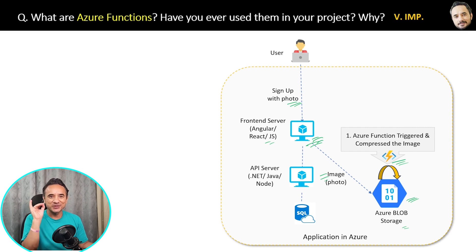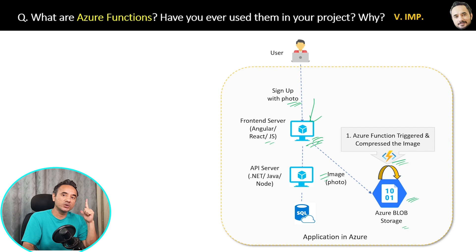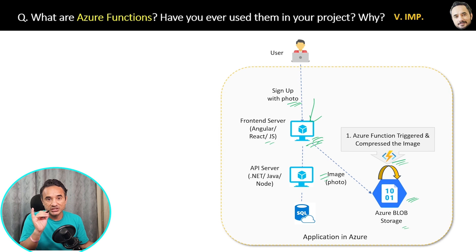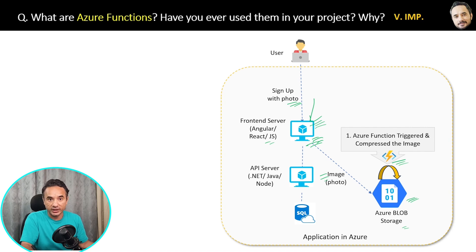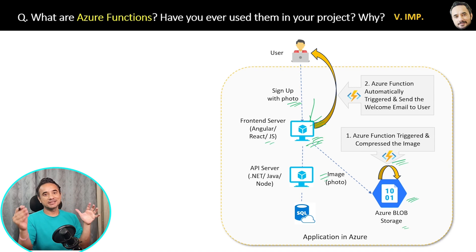So here is one more simple example. Suppose you want to ensure that whenever a user signs up, one welcome email is automatically sent to them. For that, you can write one Azure Function which will be triggered automatically as soon as the front end server receives the signup request from the user, and this Azure Function will send the welcome email to the user.